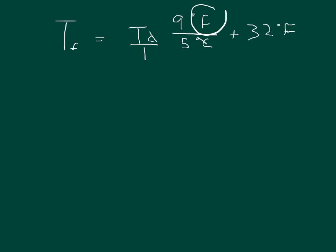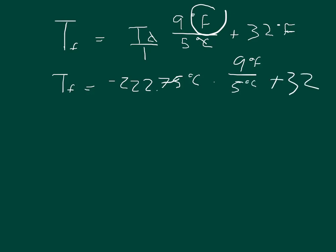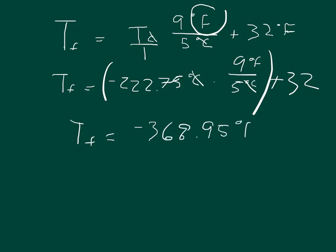So the temperature in Fahrenheit is equal to minus 222.75 degrees Celsius times 9 degrees Fahrenheit over 5 degrees Celsius, plus 32. The Celsius cancels out, and multiplying and then adding 32, you should get that the temperature in Fahrenheit is equal to negative 368.95 degrees Fahrenheit.